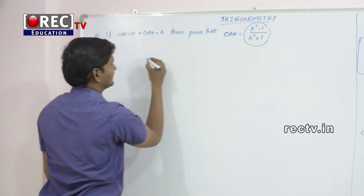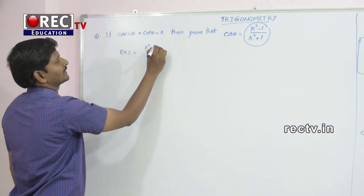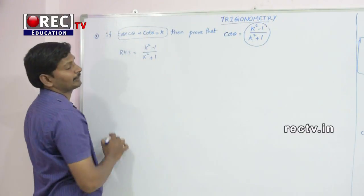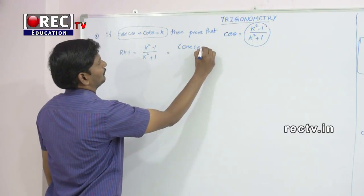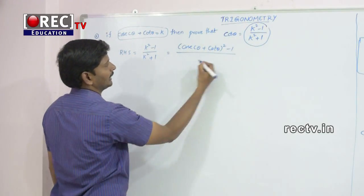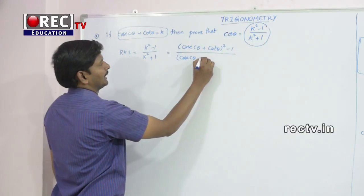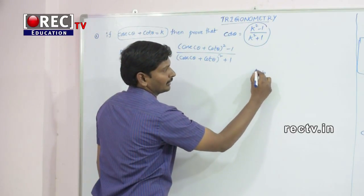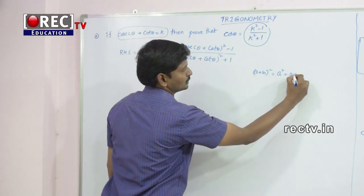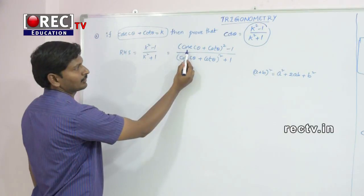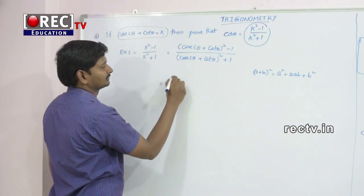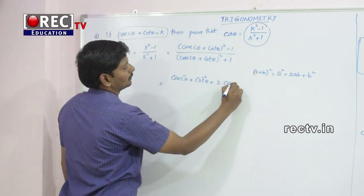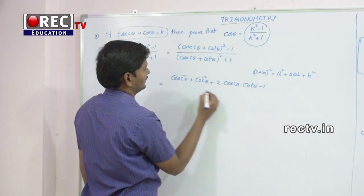Now I am following from RHS. RHS = (k² - 1) / (k² + 1). Given that k = cosecθ + cotθ, that is equal to (cosecθ + cotθ)² - 1 divided by (cosecθ + cotθ)² + 1. We know that (A + B)² = A² + 2AB + B². Applying this formula with A = cosecθ and B = cotθ, we get cosec²θ + cot²θ + 2·cosecθ·cotθ - 1, divided by cosec²θ + cot²θ + 2·cosecθ·cotθ + 1.